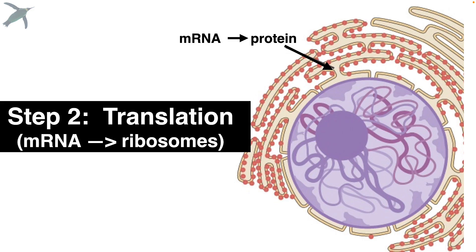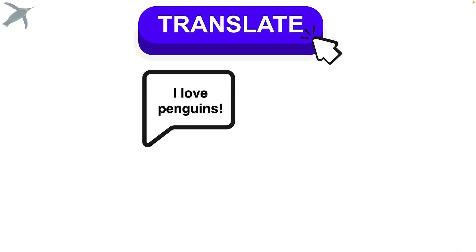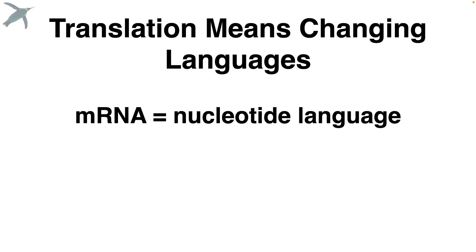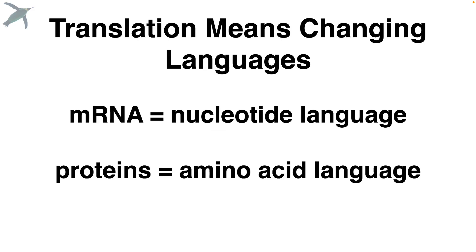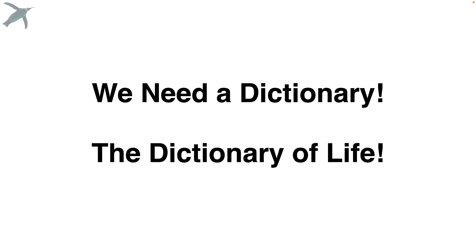Now we're going to translate that mRNA. That mRNA is going to move out to a ribosome. Translation refers to changing languages — we're going to go from nucleotide language to amino acid language. That means we're going to need a dictionary: the dictionary of life.